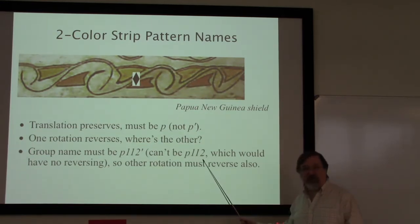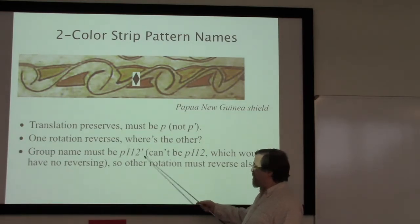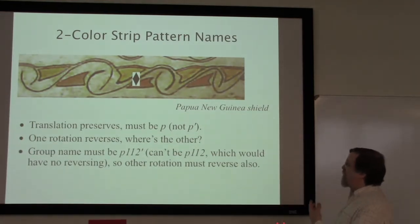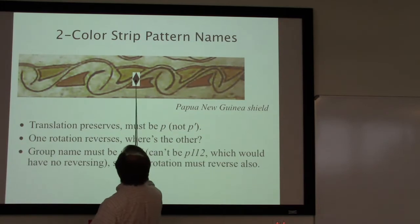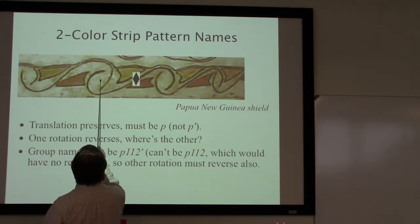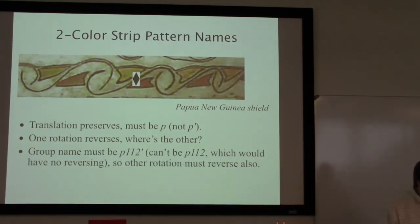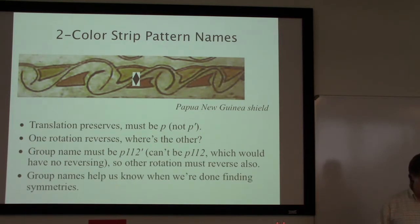We haven't put a prime on the p, so we have to put a prime somewhere or it'll look like just a regular strip group — you might guess it's p112 prime. Once you know there are two rotation points, you can figure out where the other one is. There's a rotation point here and an exact equivalent one here, so the natural place to look is halfway in the middle. That point will be a rotation point — and in fact it will reverse colors, this orange will rotate over to this yellow. So both rotation points are reversing, giving us p112 prime.